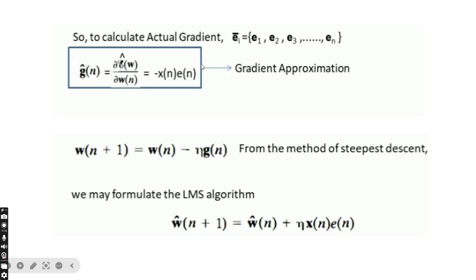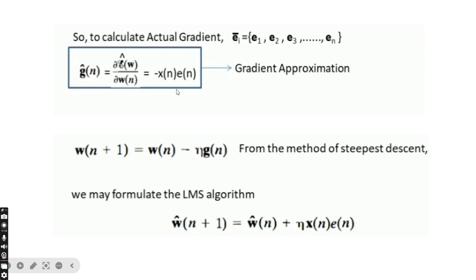Next, we calculate the actual gradient. G-cap(n) = ∂ε(W)/∂W, which equals −X(n)·E(n) as the gradient approximation. The formula from the steepest descent method gives the new weight as: W(n+1) = W(n) − η·G(n). This approximation value is adjusted to the old weight to produce the new updated weight.